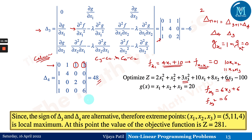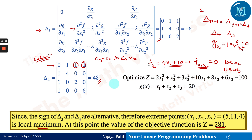Since the sign of delta_3 is negative and the sign of delta_4 is positive — one negative, one positive — the extreme point is a local maxima. The maximum value of z is 281. To verify: substitute x1 = 5, x2 = 11, x3 = 4 into the objective function, and you will get z_max = 281.